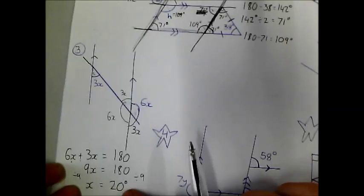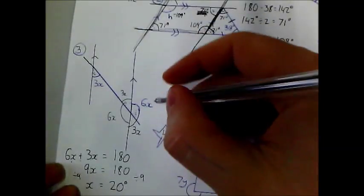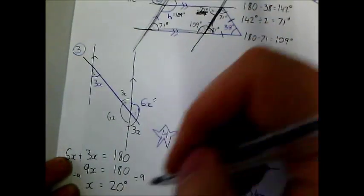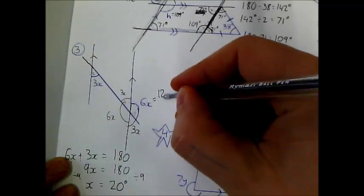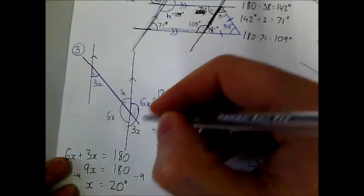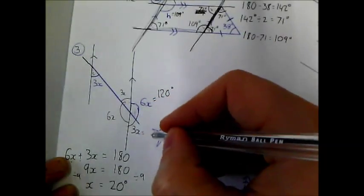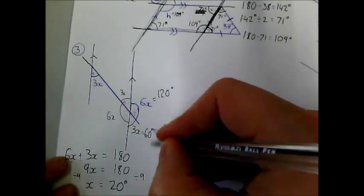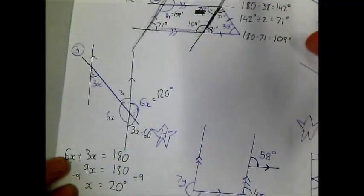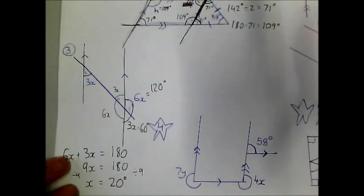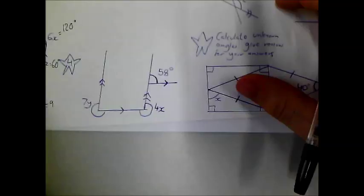So if x is 20 degrees, then 6 lots of 20 is 120 degrees, and 3 lots of 20 is 60 degrees. You can work out the remaining angles if you want as well — 60 and 120.